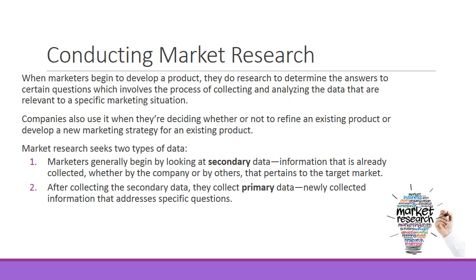Research has two kinds of data. Secondary data is information that's already been collected. Some companies do nothing but market research and sell it to other companies. Other places like the government collect demographic research data — when you fill out the census every ten years, you're providing information about yourself. The secondary data can be purchased or found through governmental or free resources.